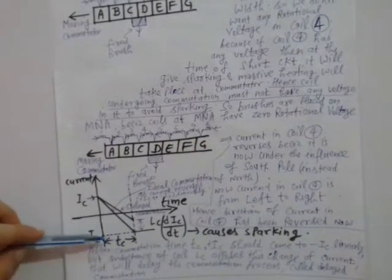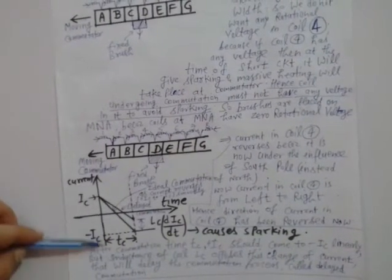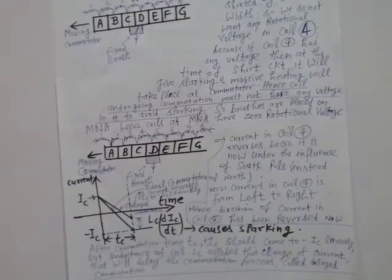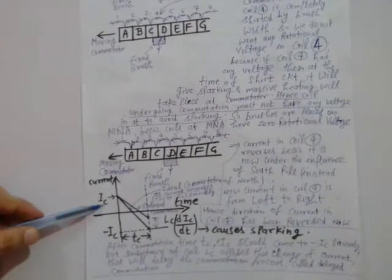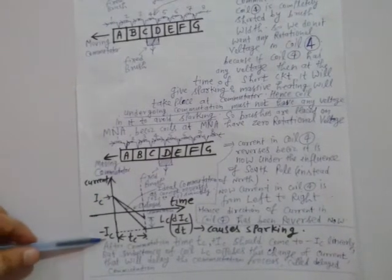Now looking at this graph: on the vertical axis is plotted the current, and on the horizontal axis is plotted the time. The current Ic in the coil has to reverse from plus Ic to minus Ic during commutation.